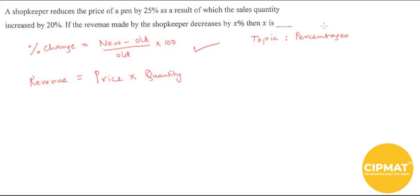Initially, let the initial price P₀ be 100. Whenever you have questions related to percentages, it's better to consider it as 100. And the quantity initially, Q₀, let that be 100 too.